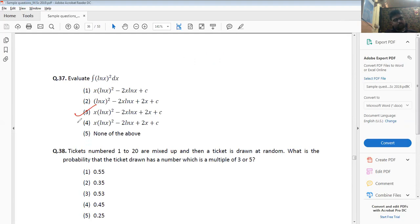Question 38: Tickets numbered 1 to 20 are mixed up and then a ticket is drawn at random. What is the probability that the ticket has a number which is a multiple of 3 or 5? Multiples: 1, 2, 3, 4, 5, 6, 7, 8, 9...